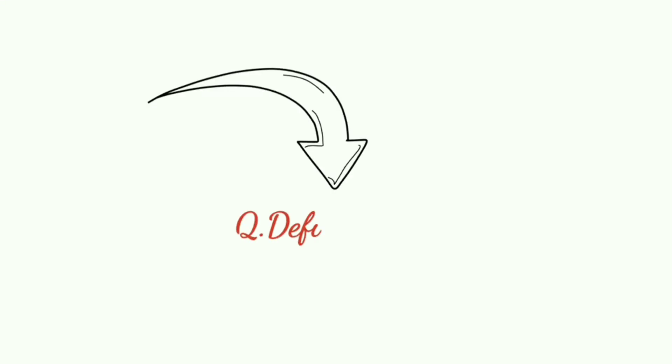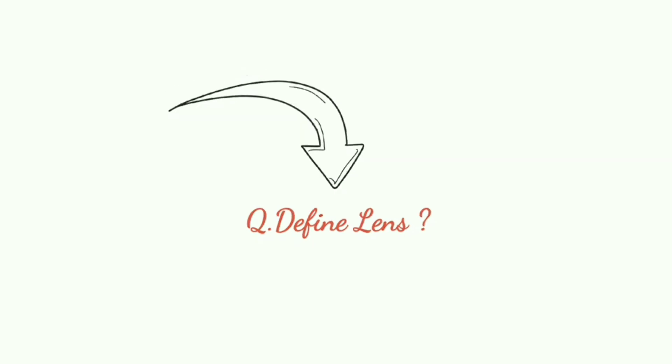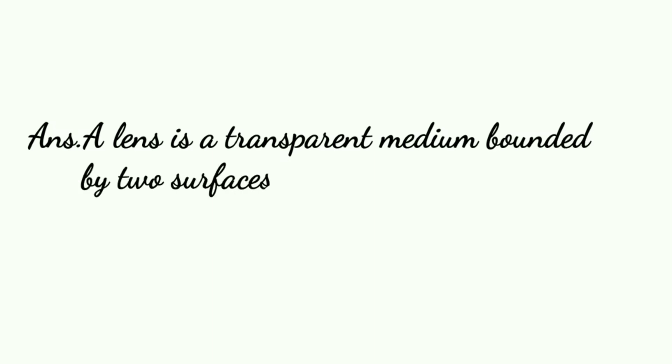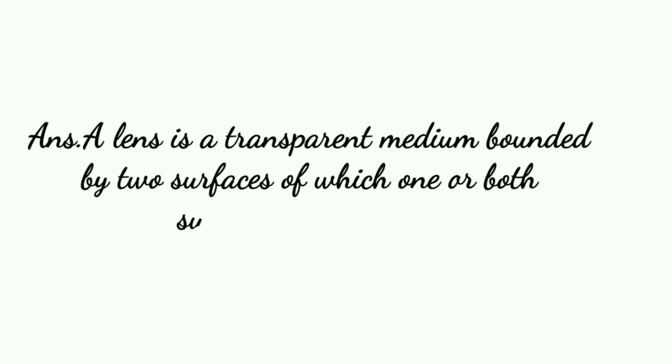In this video, I explain lens and its types just in two minutes. So the question is: define lens. A lens is a transparent medium bounded by two surfaces, of which one or both surfaces are spherical.